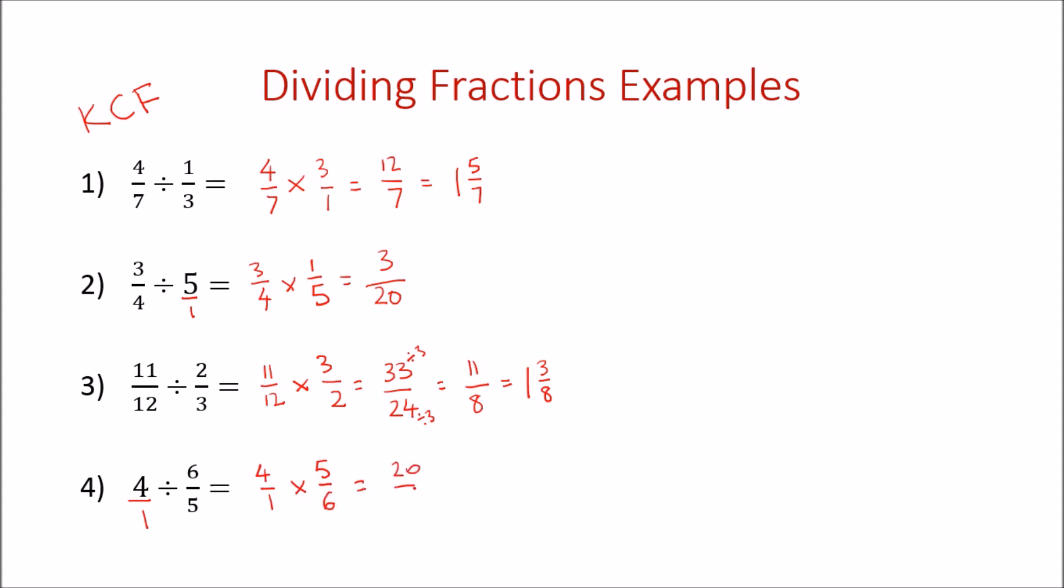They're both even, so let's go through and half both of them, and we're there. That's our improper fraction answer. Or if we want to do a mixed number, we've got three lots of 3 in there, which is 9, with one part left over. So three and one third is our final answer.